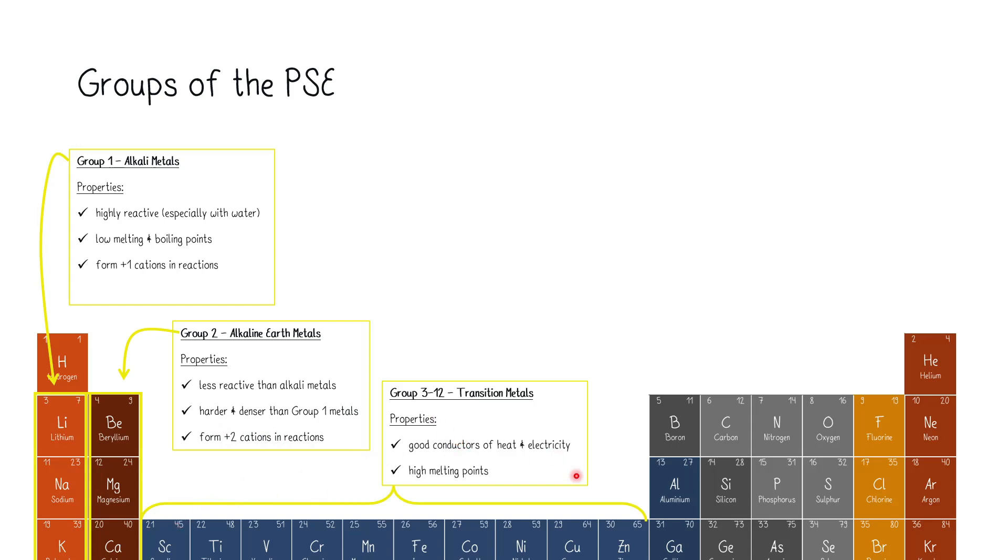Combined for group three to group 12, we can say that there are good conductors of heat and electricity, and they have quite high melting points. For the group 17 over here, those are the halogens. They are highly reactive nonmetals. And when forming an ion, they have the formal charge of a negative one. And they can exist in different states like gaseous state, liquid state, or also solid state.